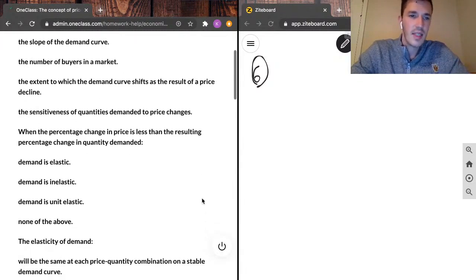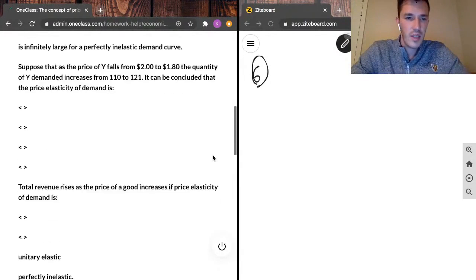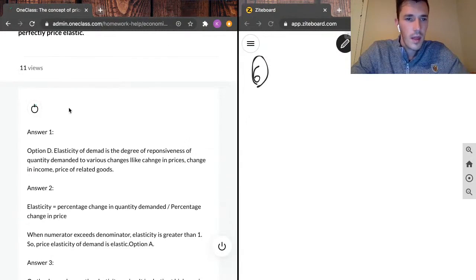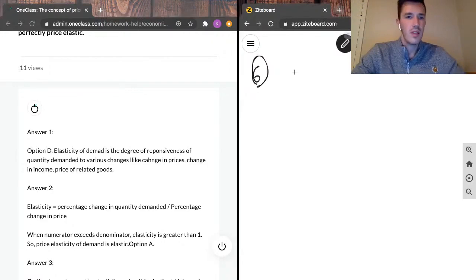The correct answer is the sensitiveness of quantities demanded to price changes. Our junior tutor has said that elasticity of demand is the degree of responsiveness of quantity demanded to various changes, like changes in price, changes in income, or prices of related goods. So maybe I'll just give the formula for elasticity of demand.